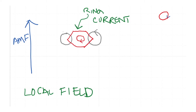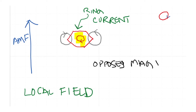This local field does two important things. One is that inside the benzene ring, the induced field opposes the magnetic field. Outside the benzene ring, the field reinforces the applied field.